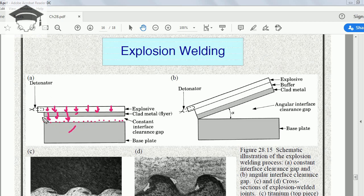After welding, the sheets become one. Similarly, when we use the angular interface clearance gap—where one end is in close contact and linearly the gap is increasing—the welding happens linearly along the interface.